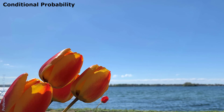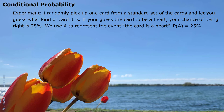Hello everyone. Here we talk about conditional probability. Let's look at an experiment first. I randomly pick up one card from a standard set of cards and let you guess what kind of card it is. If you guess the card to be a heart, your chance of being right is 25%, since we have only four different kinds of cards and each has the same quantity — 13 hearts, 13 clubs, 13 spades, 13 diamonds. We use A to represent the event the card is a heart, so probability of A equals 25%. This is classical probability.